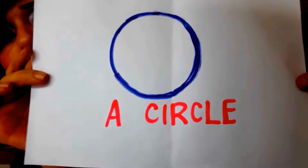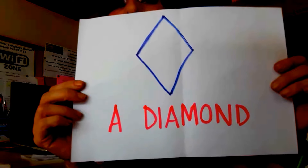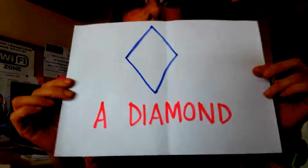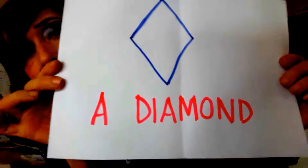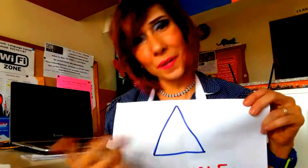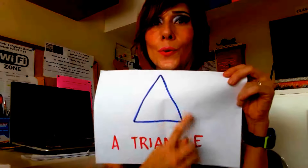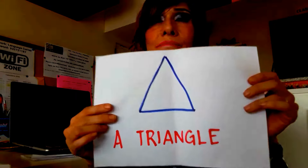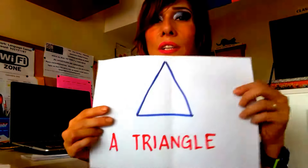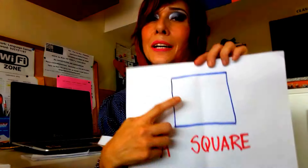This one is called a diamond. Diamond is also the name of a gem and it's the name of this shape — diamond. Then, if a geometrical shape has three angles, we call it a triangle. There are different kinds of triangles, but if they have three angles, it is a triangle.